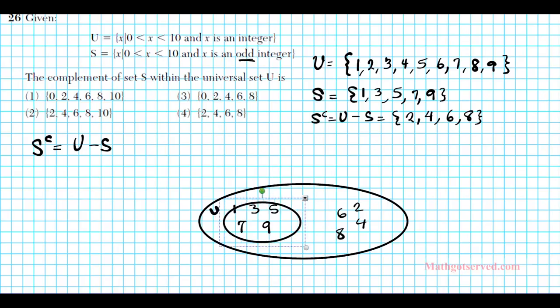Now if this is set S using the Venn diagram, then the complement of set S is basically everything in set U that's not in S. And this is it right here. Everything outside set S. So this entire piece right here is the complement of set S. And we can see that 2, 4, 6, 8 are elements of the complement of set S. So that's basically what this problem is asking for. Now we can clearly see that our answer is letter or number 4: 2, 4, 6, 8.